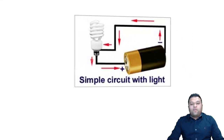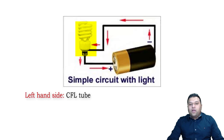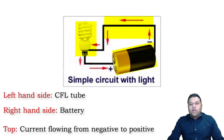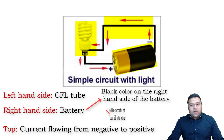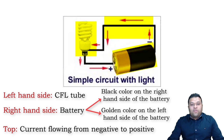The same technique can be used on other images too — for example, a circuit diagram. You can talk about the left-hand side which has a CFL tube, the right-hand side which has a battery, and on top you can see a circuit diagram in which current is flowing from negative to positive. You can talk about the black color on the right-hand side of the battery and the golden color on the left-hand side. Talk about top, bottom, right, left, different colors, different aspects — that's how you describe these images to score high.